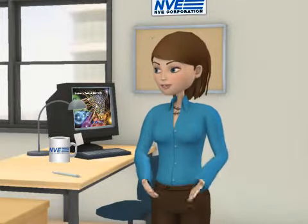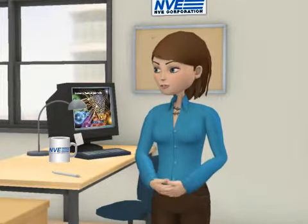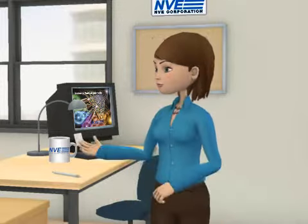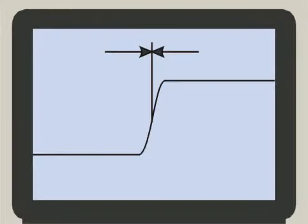NVE's IL-700 isolators have a virtually undetectable 50 picoseconds of jitter, making them ideal for precision audio.